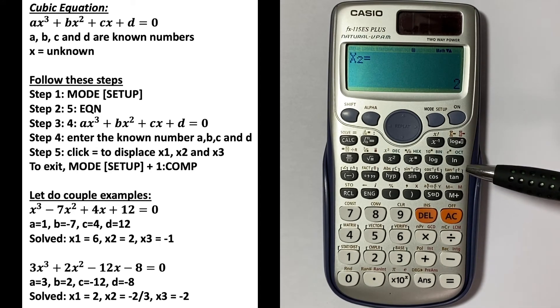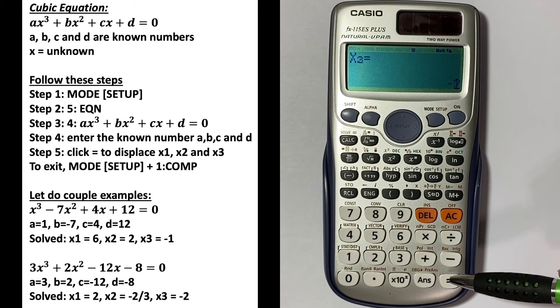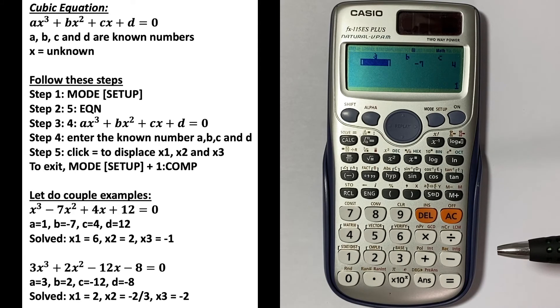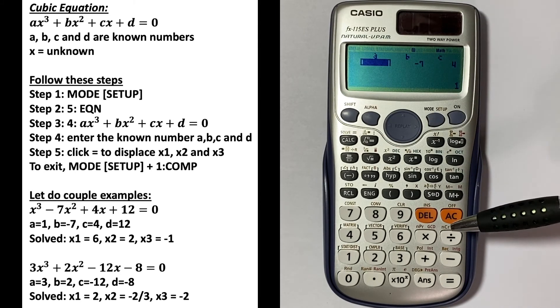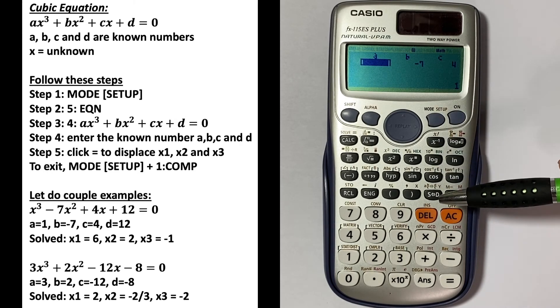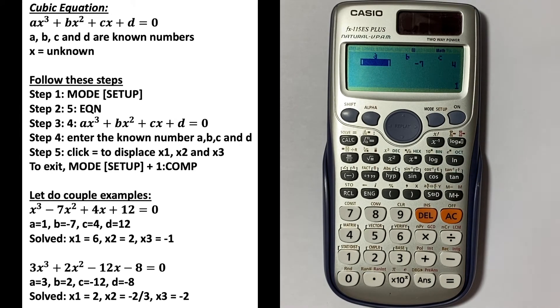Let's do another example. You're back to this symbol right here and you can clear from here. For example, we have 3x³ + 2x² - 12x - 8 = 0.